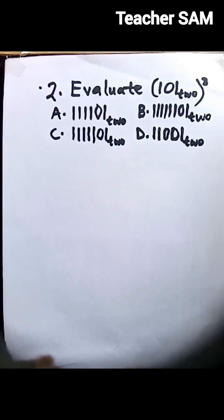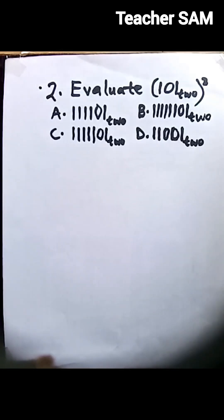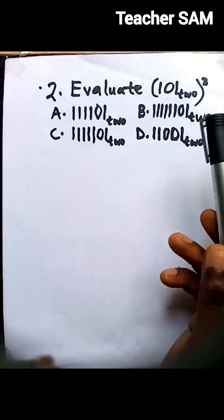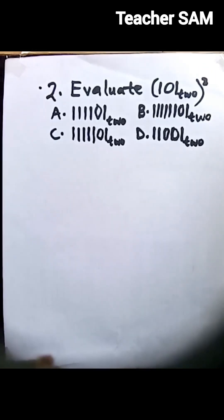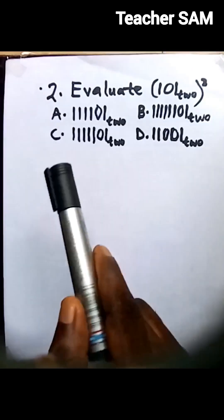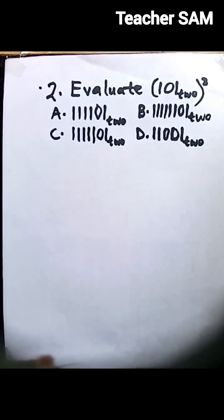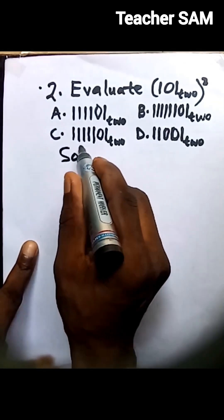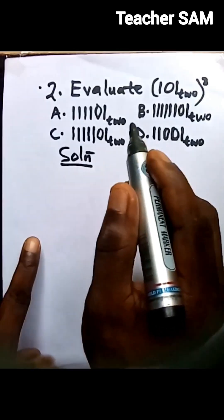We have question number two: evaluate 101 base 2 raised to power 3 raised to power 3. We have some options — option A, 111101 base 2, option B, option C, and option D. Let's go ahead to solve that.